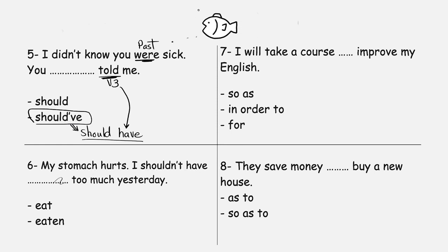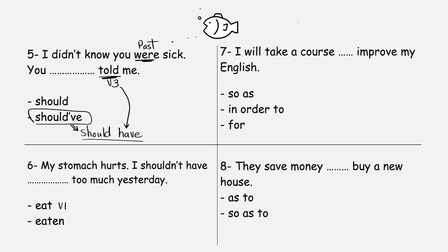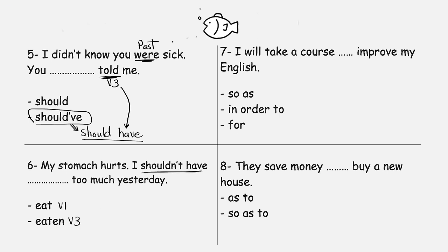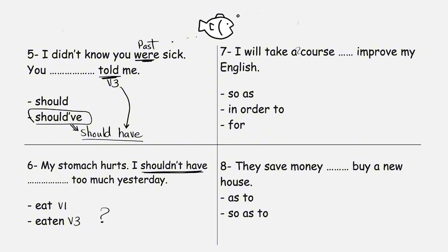Now you answer this one: 'My stomach hurts, I shouldn't have blank too much yesterday — eat or eaten?' 'Eat' is verb 1 and 'eaten' is verb 3. Which one do we use after 'should have' or 'shouldn't have'? Let me know in the comments.